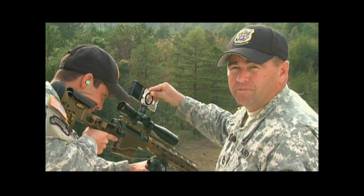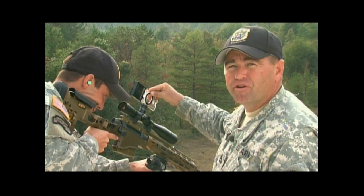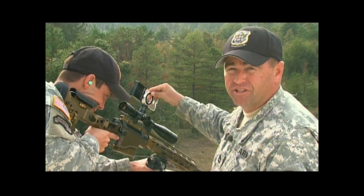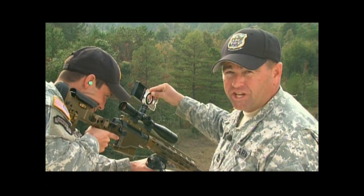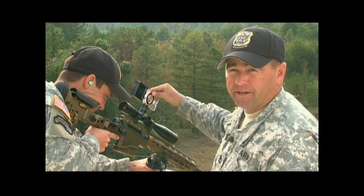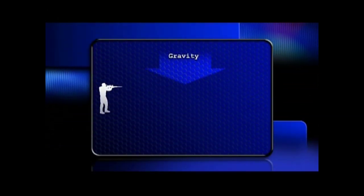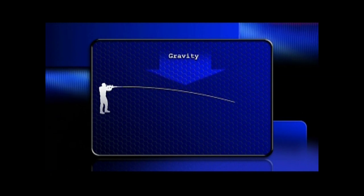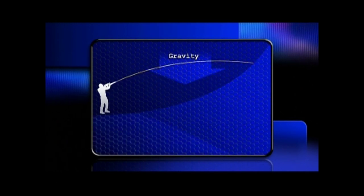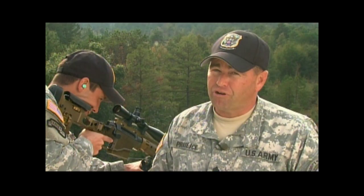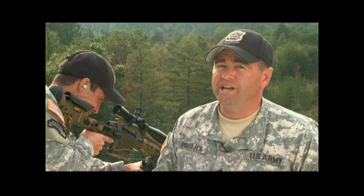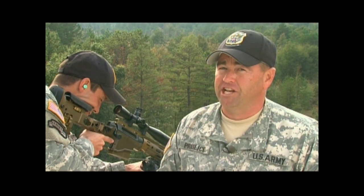In this situation, Sergeant Mangione has an angle of 30 degrees to the target. This will cause a change in the ballistic trajectory to his target. Gravity is a constant pulling force that causes the bullet to fall to the ground the moment it leaves the rifle barrel. This pulling force is the same regardless of whether the bullet is fired uphill or downhill.